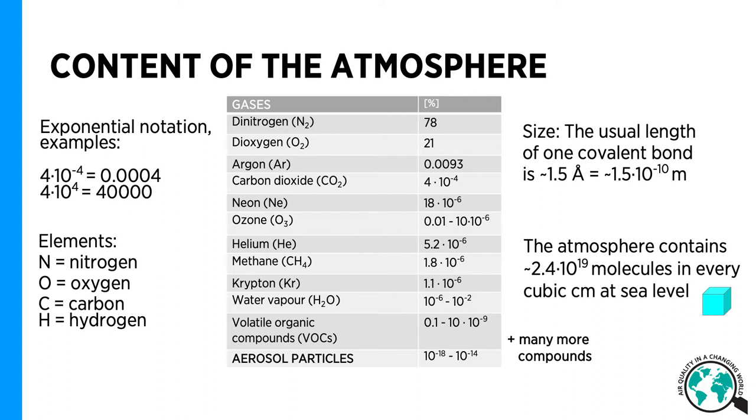Our atmosphere contains about 2.4 × 10^19 molecules in every cubic centimeter at sea level. About 99% of our atmosphere consists of dinitrogen and dioxygen, while the remaining 1% is composed of many different gases and aerosol particles.